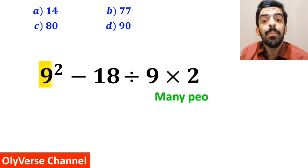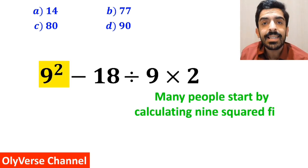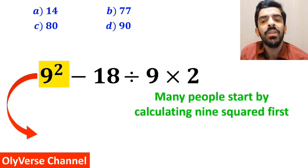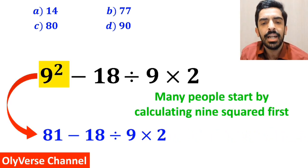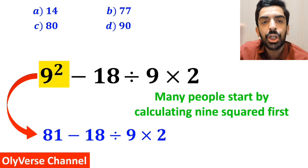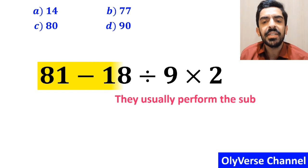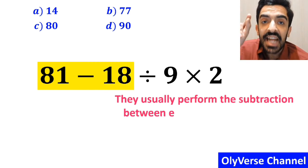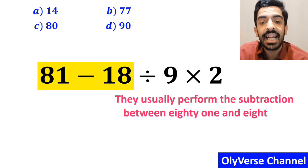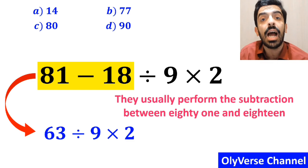To solve this problem, many people start by calculating 9 squared first, rewriting the expression as 81 minus 18 divided by 9 times 2. In the next step they usually perform the subtraction between 81 and 18, simplifying this expression to 63 divided by 9 times 2.